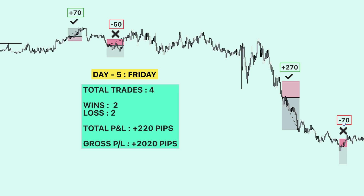Day five concluded: four trades total, two wins and two losses. Total pips gained for the day is 220 pips. You can witness the power of the combos used in Martin Strategy, which helps sustain performance when the market is choppy and gives trades when the market trends.